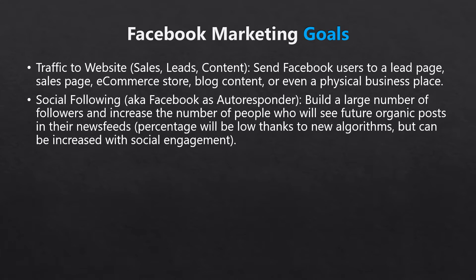Next, let's look at the social following goal, which we also refer to as Facebook as autoresponder. In this goal category, your aim is to build a large number of followers. This usually means likes in the case of a business or brand page, or it could mean friends if you're focusing on your personal profile. The reason we also refer to this as Facebook as autoresponder is because the main sought-after benefit is to increase the number of people who will see your posts in their newsfeed. In this sense, your Facebook posts become similar to sending out email broadcasts via your autoresponder. It should be noted that Facebook has recently adjusted its algorithms in such a way that people tend to see less posts from businesses they've liked.